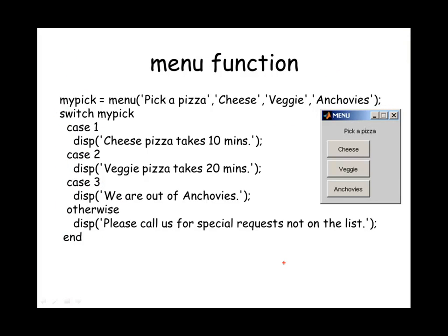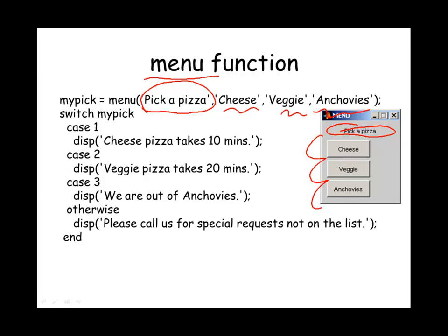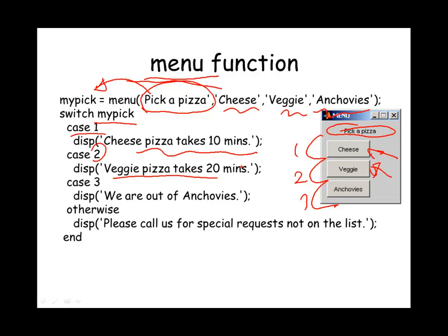If you want to get fancy when asking a user for different options, you can use the menu function. The first argument is the title or question, followed by the different options you want to provide to the user. When the user clicks one of the buttons, you get an output value of 1, 2, or 3 depending on which item was clicked. You then switch based on that value to perform different actions. You can try this example in MATLAB to see the result.